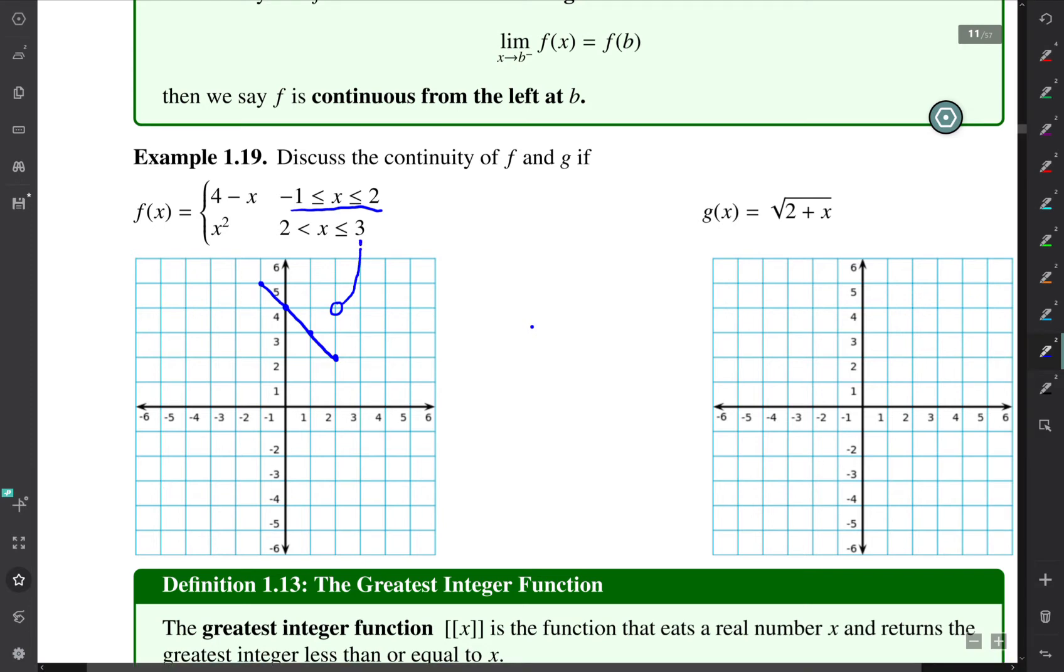Okay, so this is continuous on the part where it's a line, it's continuous in the part where it's a parabola. The only discontinuity on that closed interval from negative 1 to 3 is when x is equal to 2, and when we're discussing continuity we always write it in terms of the x intervals.